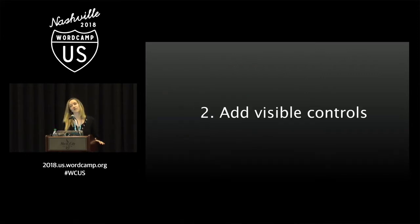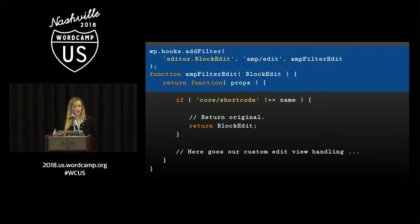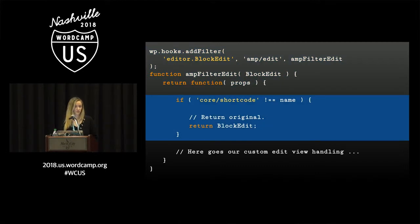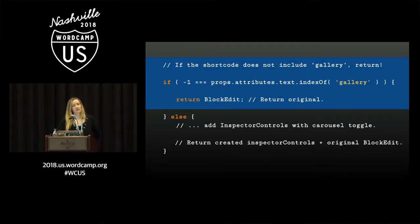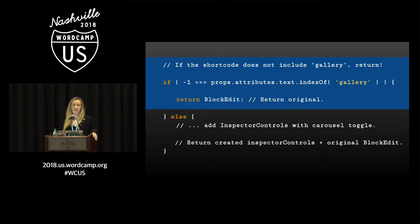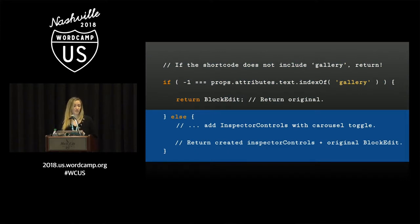Now we have settings, so we also want to add the visible control. Using the same editor.BlockEdit filter, we check if this is not a shortcode and return the original component. Otherwise we add the control — but since we only want this control for a gallery shortcode, we actually check whether the editor typed in 'gallery'. If they did not, we return the original component. Otherwise, we add the inspector controls with the carousel toggle exactly the same way as the previous example, and return the original together with the custom inspector controls.